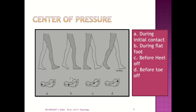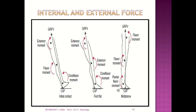This is the center of pressure. At initial contact, the center of pressure is at the heel. At foot flat, the center of pressure shifts forward. Before heel-off, the center of pressure moves further forward, and before toe-off, the center of pressure shifts to the forefoot. The ground reaction force vector during initial contact passes behind the ankle joint, in front of the knee joint, and in front of the hip joint. Opposite muscles therefore work to maintain the limb in the proper phase of gait.